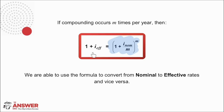If you think about it, nominal and effective interest rates will be the same if interest is calculated only once a year — in other words, if we make M equal to 1, you land up with 1 plus I_EFF equals 1 plus I_NOM. The difference between the nominal and effective interest rates will increase the more times interest is calculated in a single time period — think for a bit which one will be greater.